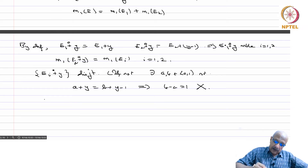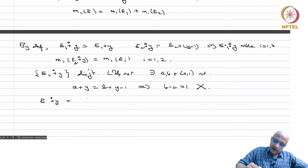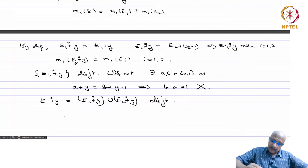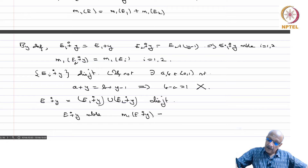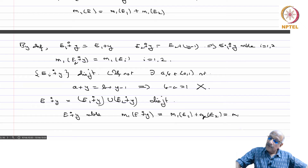Therefore E plus y equals (E1 plus y) union (E2 plus y), which is a disjoint union, and therefore E plus y is measurable and m1 of E plus y equals m1 of E1 plus m1 of E2, which equals m1 of E. This proves the lemma.